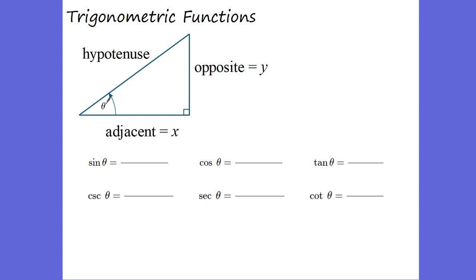Theta is the angle sitting right here on our triangle. You can see the adjacent, or next to this angle, is the x. The opposite is going to be the y, and of course this hypotenuse — I'm going to call this hypotenuse r.